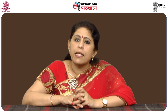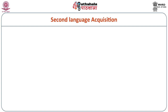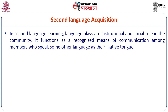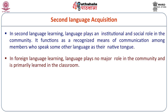In second language learning, the language plays an institutional and social role in the community. It functions as a recognized means of communication among members who speak some other language as their native tongue. In foreign language learning, the language plays no major role in the community and is primarily learned in the classroom — that is learned, not really acquired. The distinction between second and foreign language learning is what is learned and how it is learned.